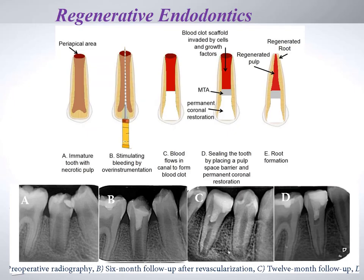The last technique is regenerative endodontics, which overcomes the clinical challenges of apexification. It is indicated for immature teeth with non-vital pulp, and like the other procedures, is done only for permanent teeth, not primary. The challenges of apexification it overcomes include: root length never increases physiologically, root wall thickness never increases, the tooth remains prone to fracture, and the crown-to-root ratio remains poor.